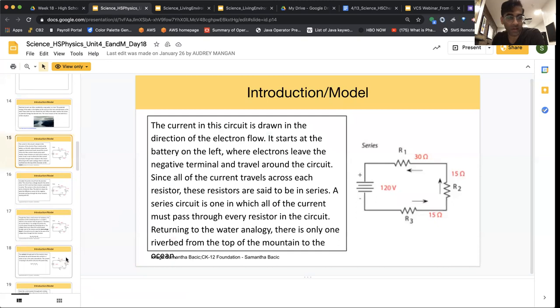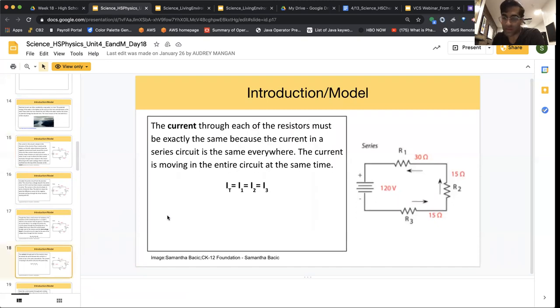And the important thing to know with current is that it's going to be the same throughout. So they say I total equals I1 equals I2 equals I3.